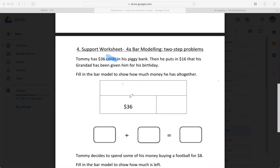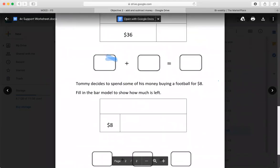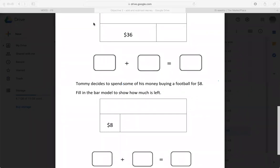So they already put 36 here for you. How much more did he get? And what's your total? Now, Tommy decides to spend some of his money buying a football for $8. Fill in the bar model to show how much is left.